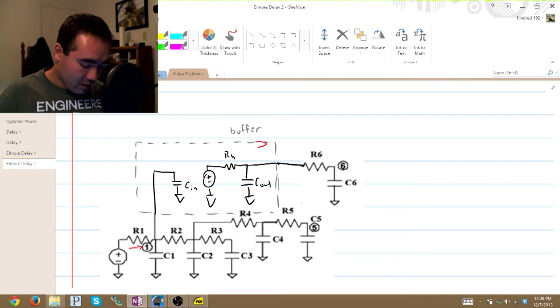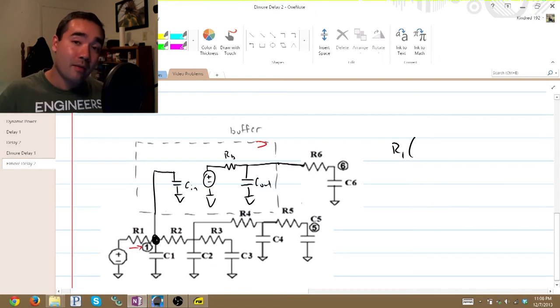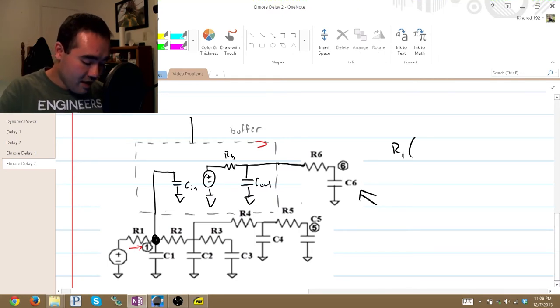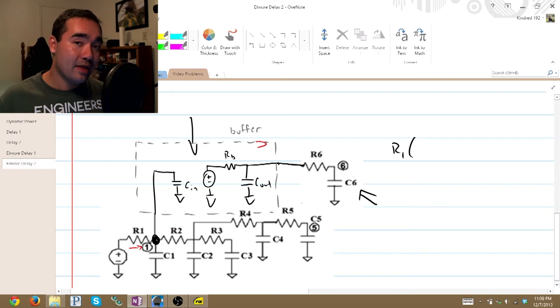So we'll go ahead and start with R1. We write R1 times everything downstream from this node capacitor-wise, which is C1 through C5, not C6, because there's an electrical break between the buffer and the rest of the circuit. So C1, and I'll just write this as C1 through C5. Don't do this on a test.